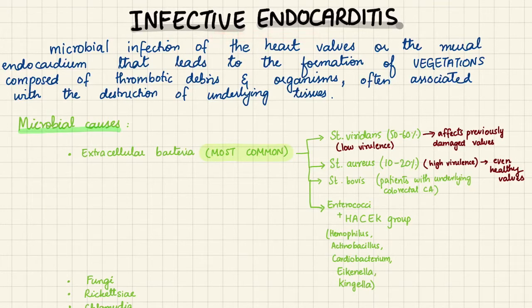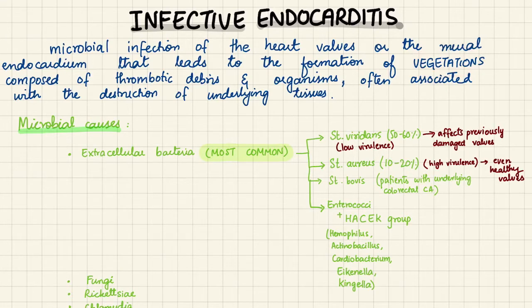Infective endocarditis is a microbial infection of the heart valves or the mural endocardium that leads to the formation of vegetations composed of thrombotic debris and organisms, often associated with the destruction of underlying tissues.